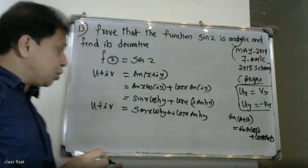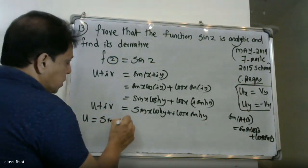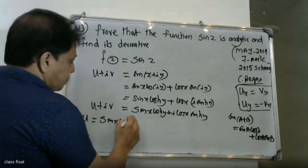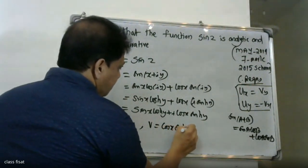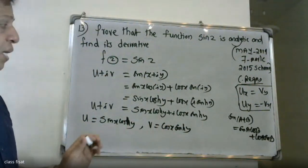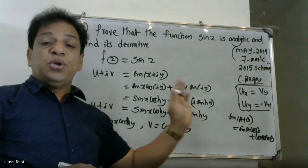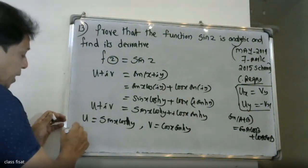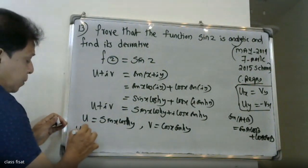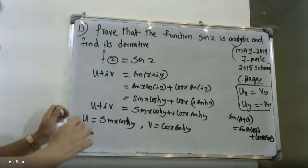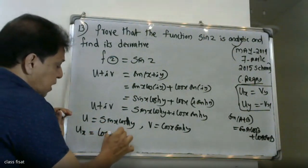The real part u equals sin(x)cosh(y), and the imaginary part v equals cos(x)sinh(y). Now we differentiate u partially with respect to x: ux equals cos(x)cosh(y). Differentiating u with respect to y gives uy equals sin(x)sinh(y).